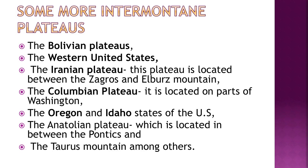More examples of inter-mountain plateaus include the Bolivian Plateau, the Western US plateau, the Iranian Plateau located between the Zagros and Elburs mountains, the Colombian Plateau located in parts of Washington, Oregon and Idaho states of the US, and the Anatolian Plateau located between the Pontic and Taurus mountains.